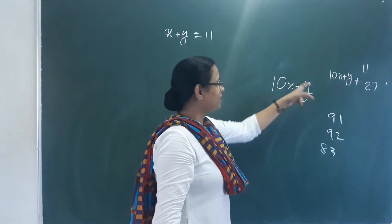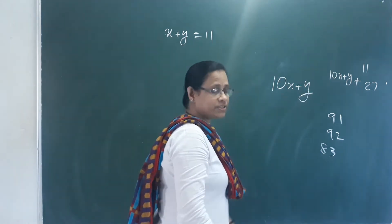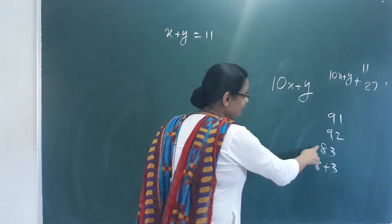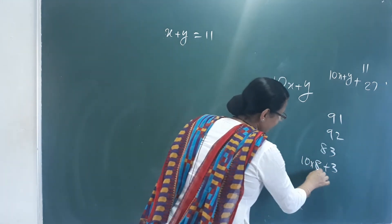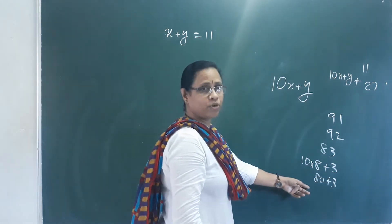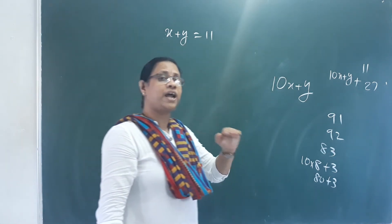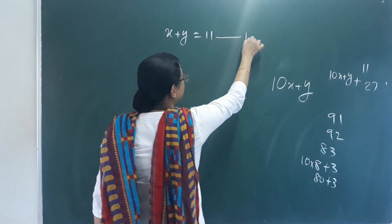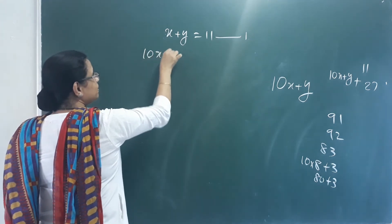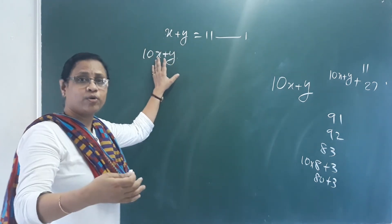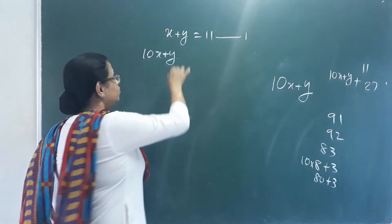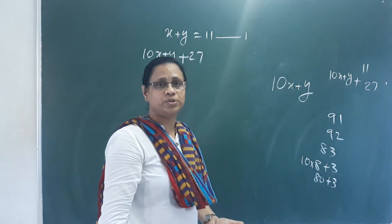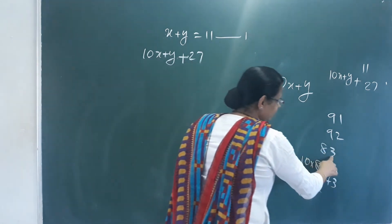A 2-digit number is written in standard form as 10x plus y. For example, 83 means 8 tens and 3 ones: 8 times 10 plus 3 equals 83. So our 2-digit number is 10x plus y. When we interchange the digits, the new number is 10y plus x. The interchanged number is 27 more than the original.